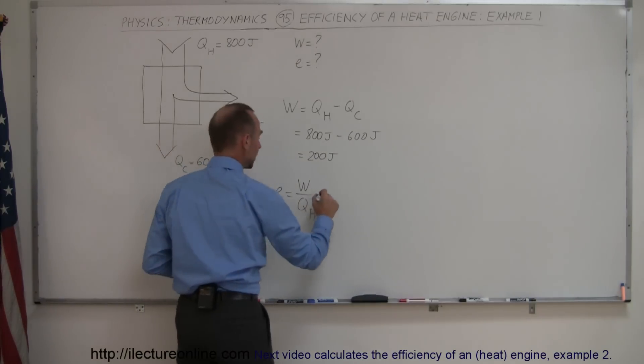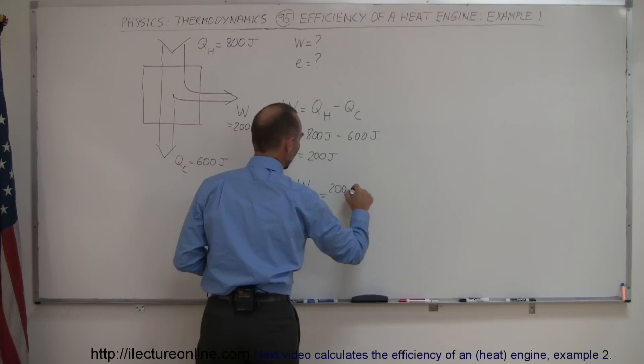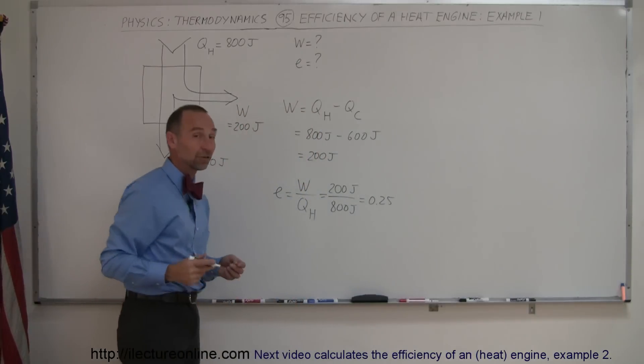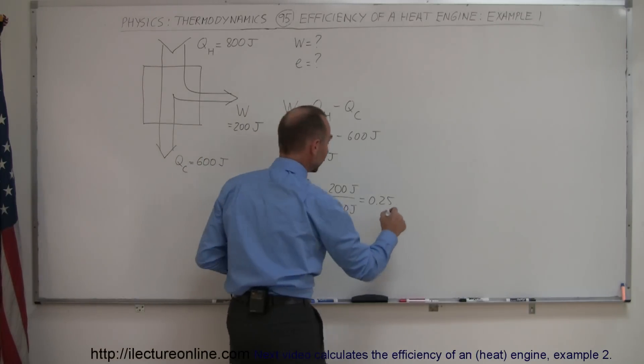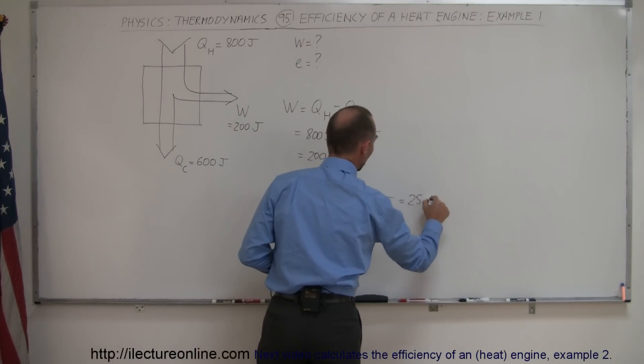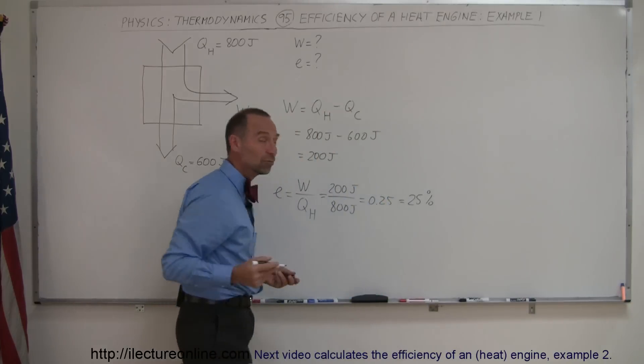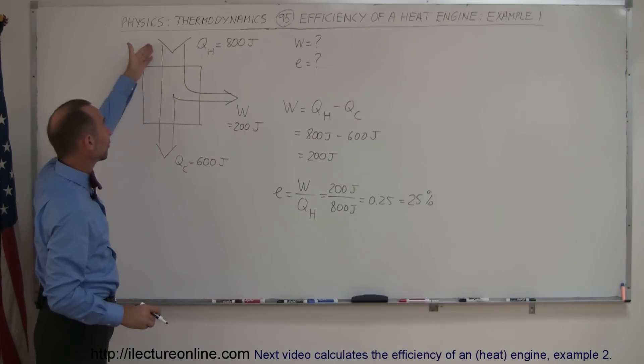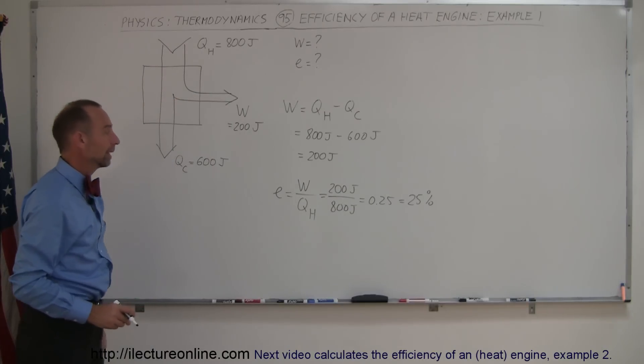And so in this case, that would be 200 joules divided by 800 joules, which is equal to 0.25. And of course, we like to express that in terms of percent. So converting that, that is equal to 25% efficient, which means that this engine uses 25% of the heat taken from the hot reservoir and turned it into work.